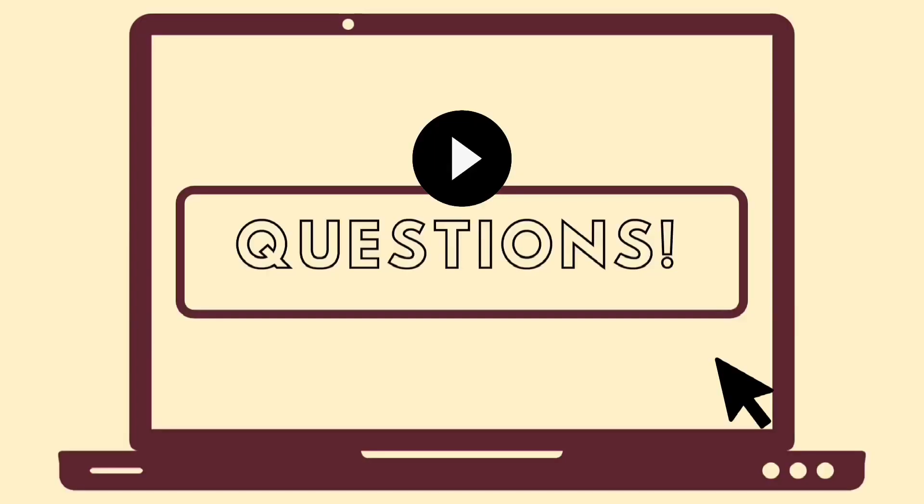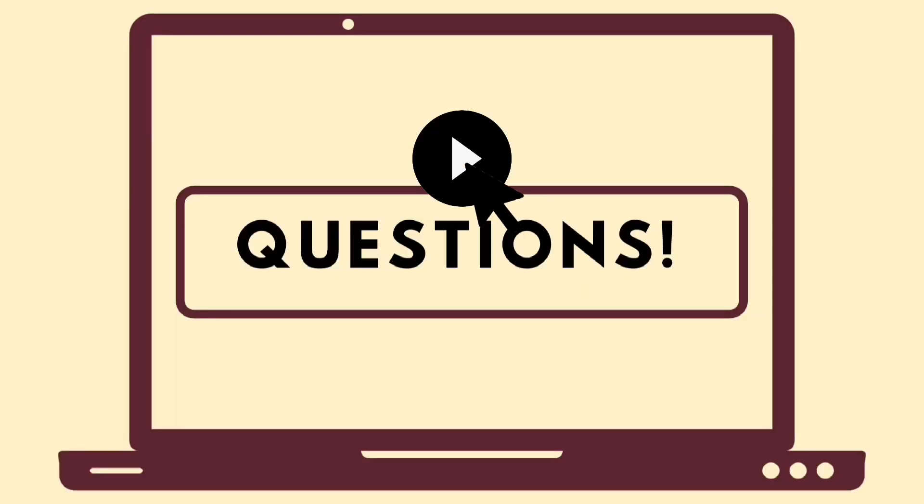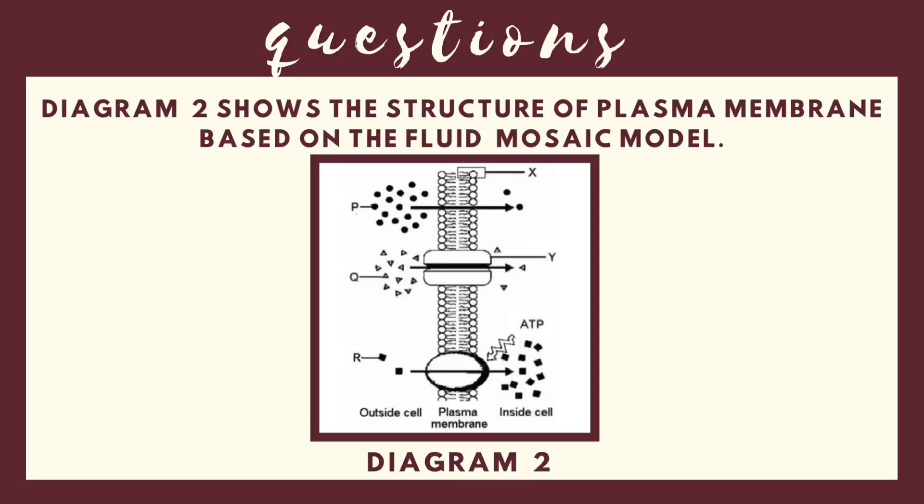Hello guys, let's test yourself with this question. Diagram 2 shows the structure of plasma membrane based on the fluid mosaic model. Based on diagram 2, we can see the outside cell of plasma membrane and the inside cell of plasma membrane.